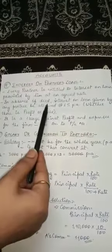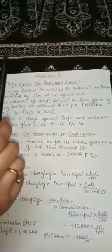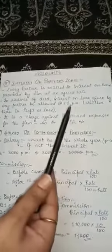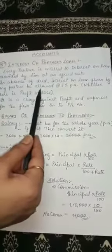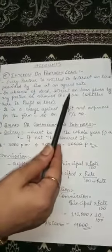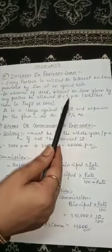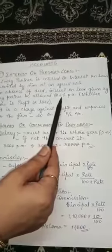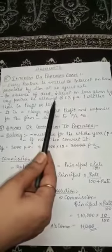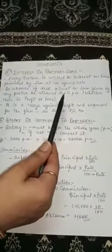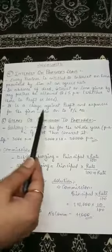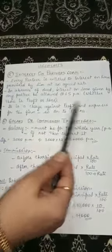In absence of a deed — that means while giving the loan, if nothing is decided about at what rate the interest would be given by the firm — then in that case, interest on loan given by any partner is allowed at 6% per annum. Whatever loan the partner has given to the firm, on that the firm has to pay interest at the rate of 6%. Whether the firm is getting profit or loss, the firm has to pay the interest as they have taken the loan from any outsider. It is a charge against profit.